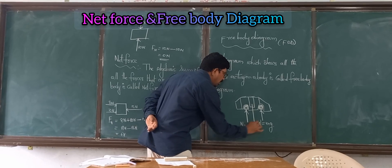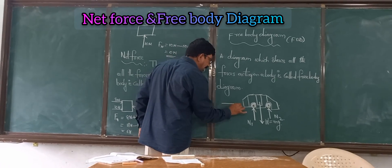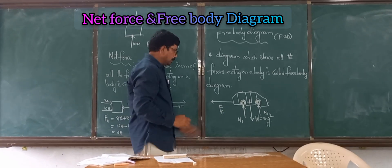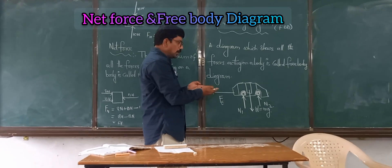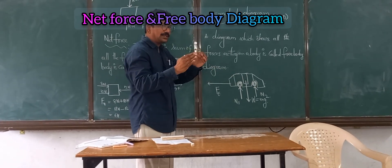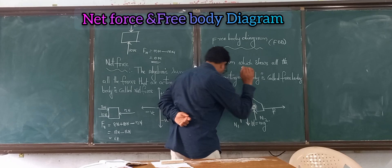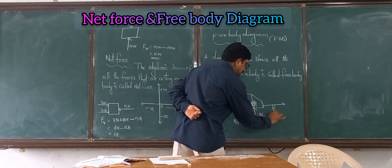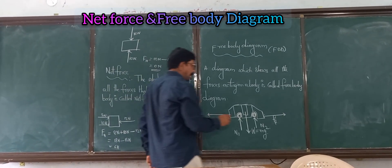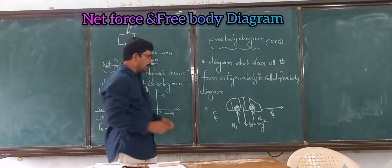The car is moving towards the left side, so the engine force acts in that direction. Since the car is in motion and in contact with the road surface, a frictional force acts and resists the motion of the car. The frictional force always acts opposite to the direction of motion of the car, trying to oppose it.